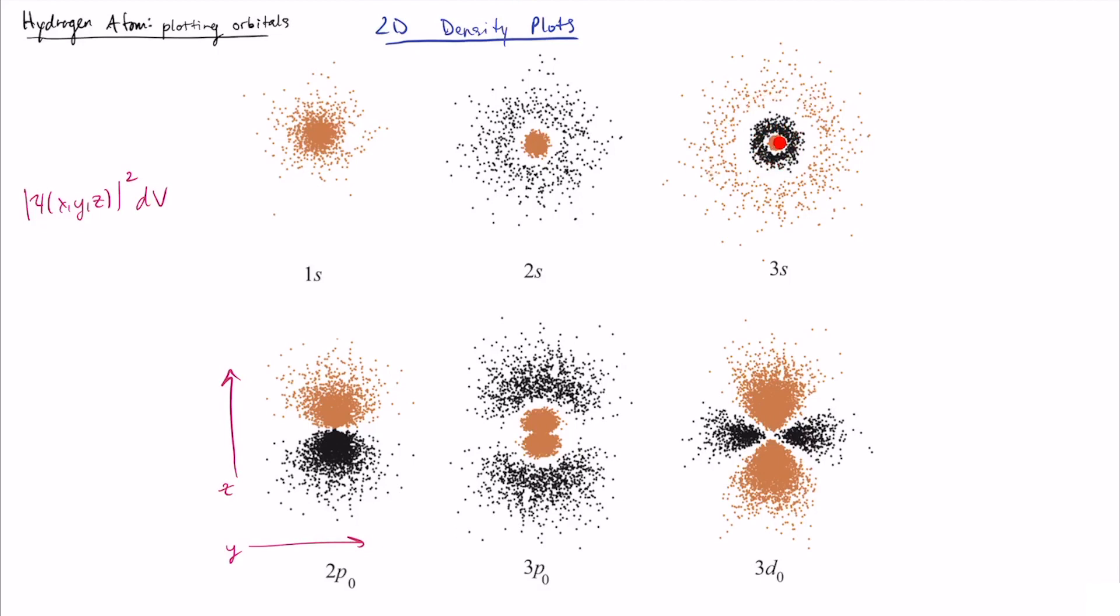And now in the bottom row, we have 2p0, 3p0, and 3d0.